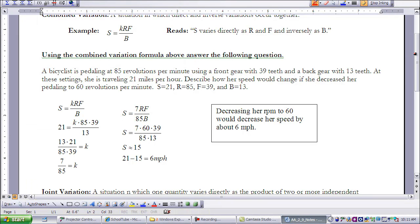Go ahead and do your calculations. 7 times 60 times 39, all of that divided by 85 times 13. So we get the speed of approximately 15. So we've gone from 21 to 15, which is a decrease of about 6 miles per hour.